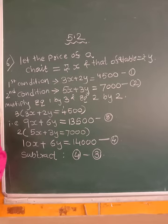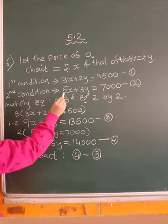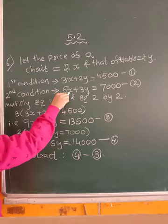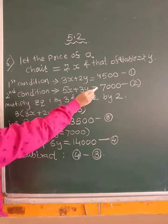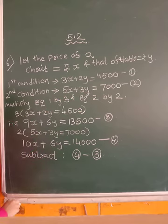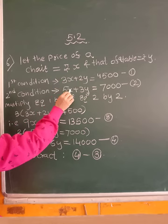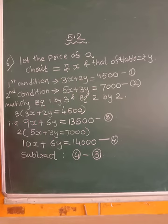Now second condition they have said, cost of 5 chairs and 3 tables. 5 chairs cost is 5x. 3 tables cost is 3y. Therefore, we have 5x plus 3y is equal to 7,000. So this is your first equation and this is your second equation.